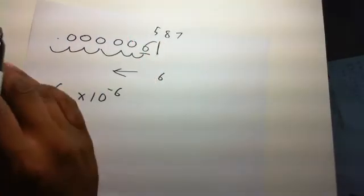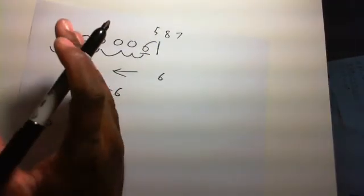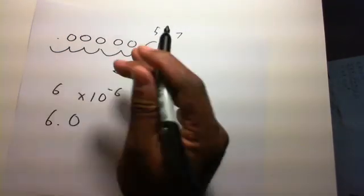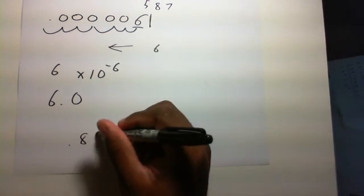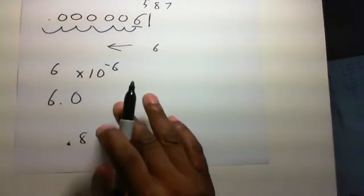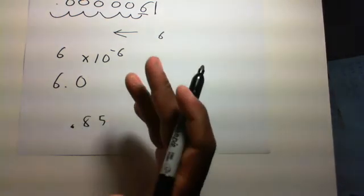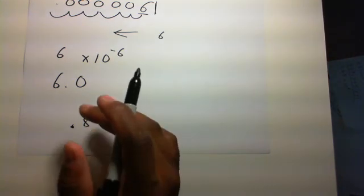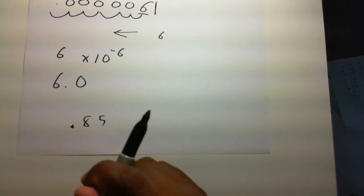And you only use scientific notation when it's a thousand and up or it's a thousandth and down. Because you don't have to write this in scientific notation. You can, but you don't have to because the number is small enough. It's within range. So this doesn't have to be in scientific notation. Thanks.